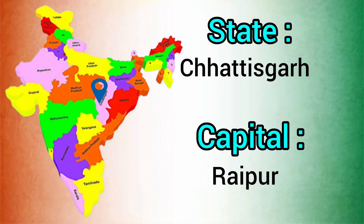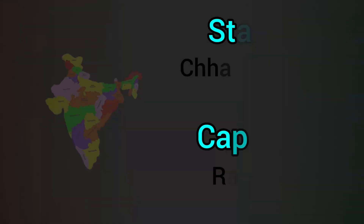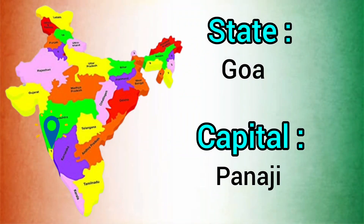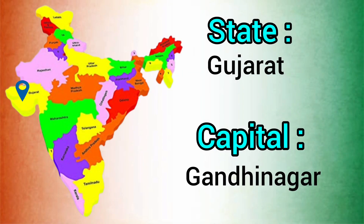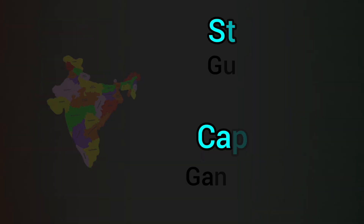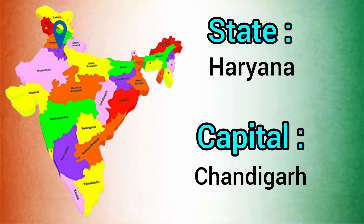State: Chhattisgarh. Capital: Raipur. State: Goa. Capital: Panaji. State: Gujarat. Capital: Gandhinagar. State: Haryana. Capital: Chandigarh.